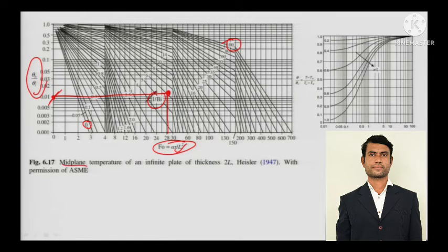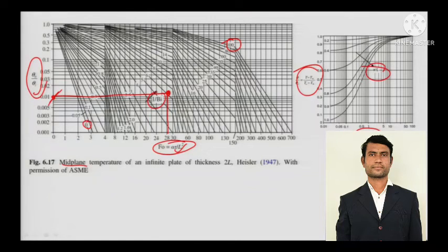When there is a correction — meaning when we need to find temperature away from the centerline — you need to use a second chart. On the y-axis is the temperature profile, and you have 1 by Biot number and x by L, where x is the distance away from the centerline.